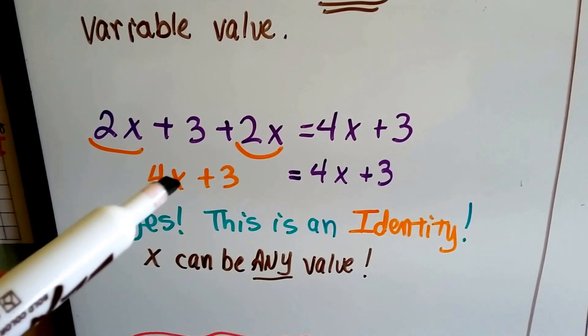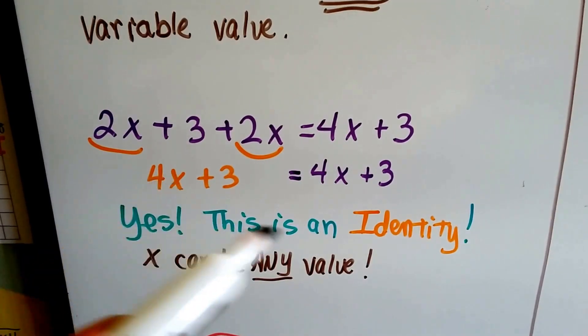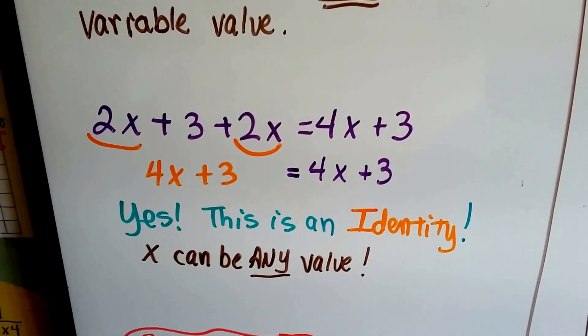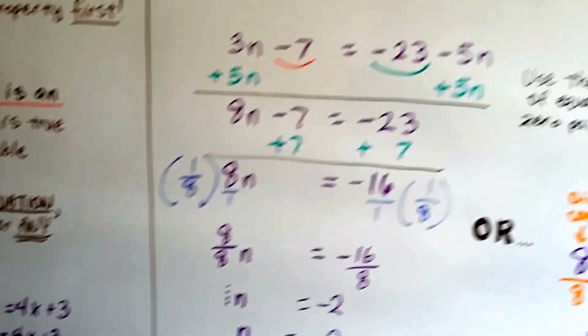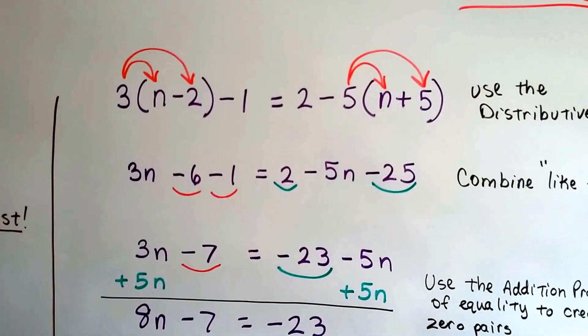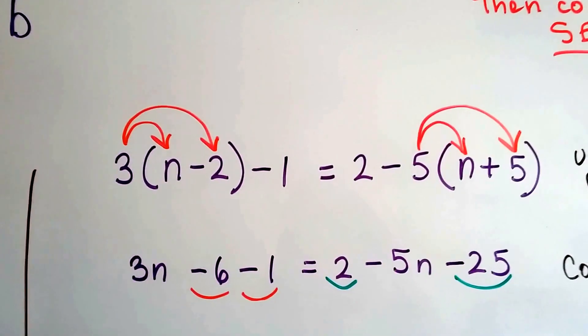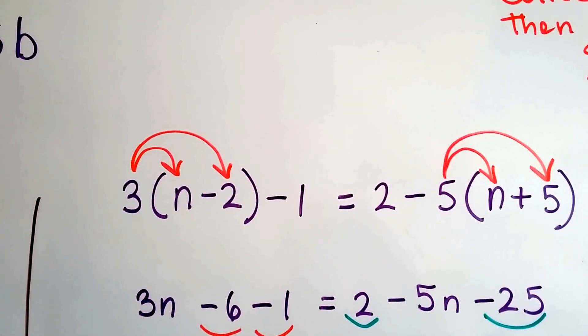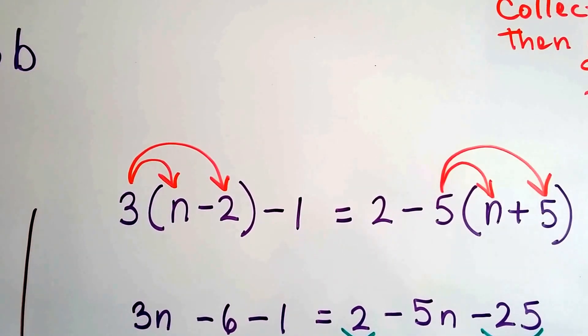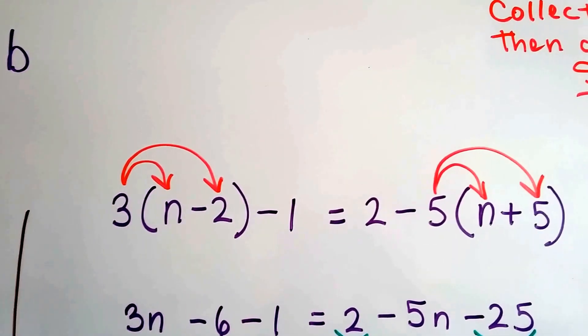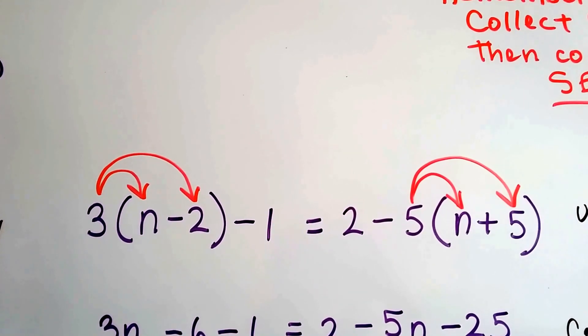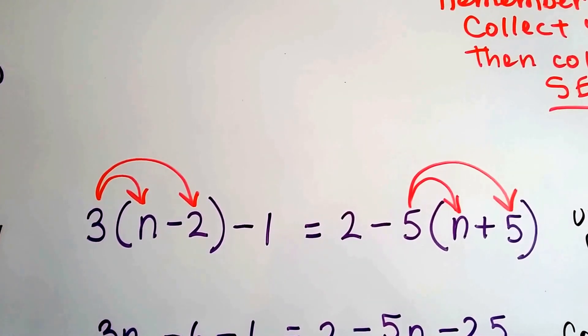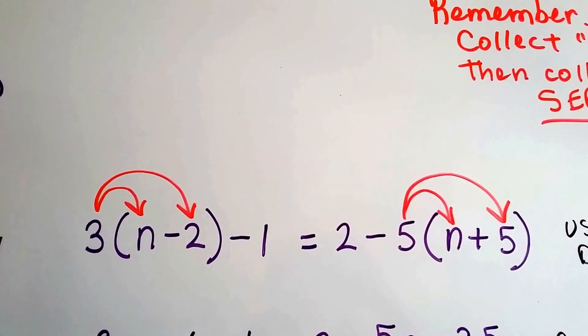When an equation can have any value for the variable and it'll be true, then it's an identity. Makes you think of identity property, doesn't it? All right, let's take a look at this equation. We've got n minus 2 in parentheses, and we've got a 3 on the outside of the parentheses, and then we're going to subtract 1, and that equals 2 minus a 5 is outside the parentheses with the n plus 5.